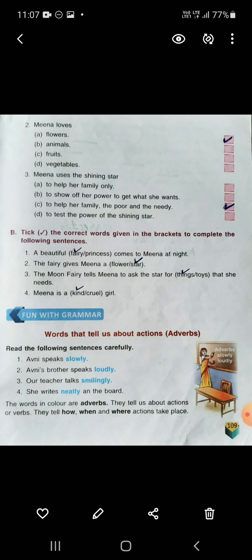Now for Part B, take the correct words given in the brackets to complete the following sentences. A beautiful fairy comes to Meena at night. The fairy gives Meena a star. The moon fairy tells Meena to ask the star for things that she needs. Meena is a kind girl.